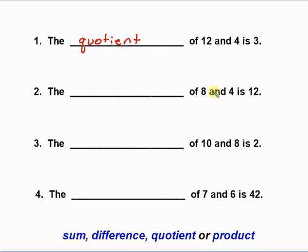The blank of 8 and 4 is 12. The sum of 8 and 4 is adding them together. And that does give us 12. So we'll say that the sum of 8 and 4 is 12.